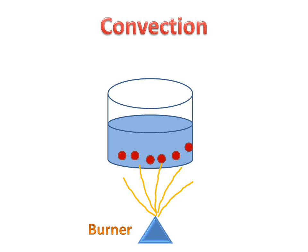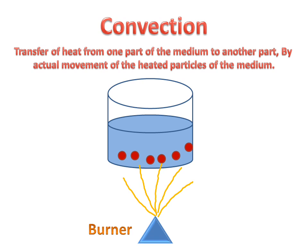What is convection? Convection is the transfer of heat from one part of a medium to another. In this case, water is the medium, in a container. Heat is transferred by the actual movement of the heated particles of the medium — the particles of the medium will be heated and move through the medium, transferring their heat to other molecules.